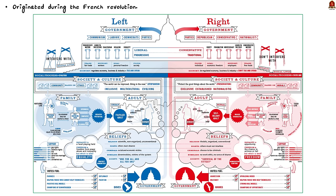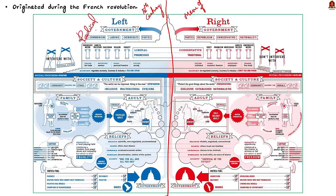Before that let us look into the origin of the term. The terms right wing and left wing originated during the French Revolution in the late 18th century. During the French Revolution, members of the national assembly who supported the monarch sat on the right side of the assembly hall, while those who supported radical change and the revolution sat on the left side. In other words, those who wanted to stay closer to tradition were on the right and those who wanted more change were on the left. This physical seating arrangement led to the terms right wing and left wing to describe political ideologies, with right wing coming to be associated with conservative and left wing with liberal.